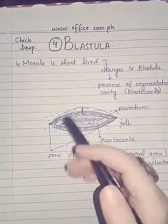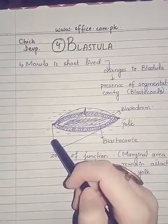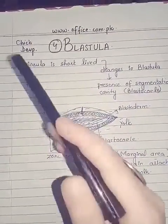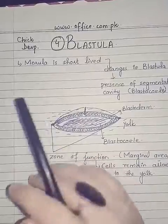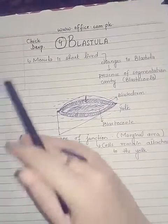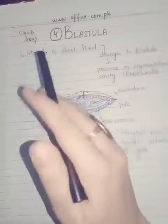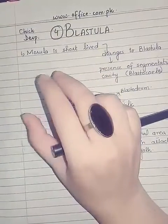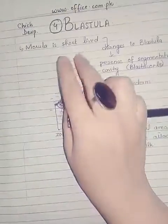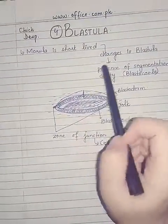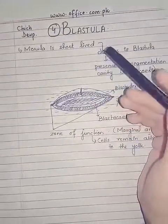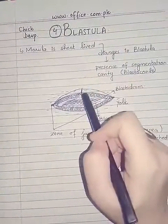Dear students, the next phase in the development of chick is blastula. The morula, which is formed in the previous stage because of the cleavage in embryo, is short-lived — its duration of existence is very small — and after a short time it changes into blastula. Blastula is basically characterized by the specialty of this phase.